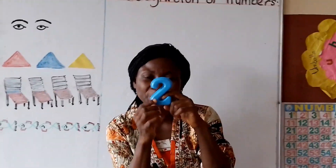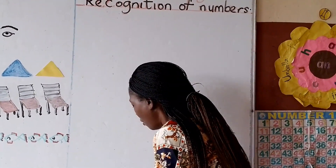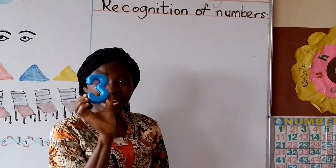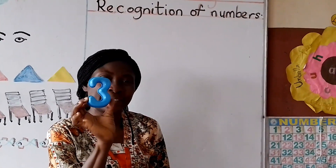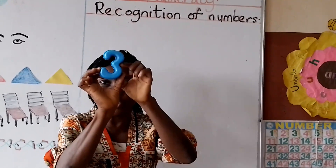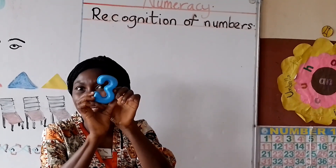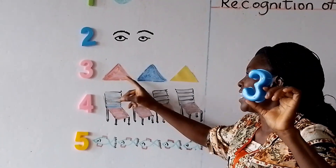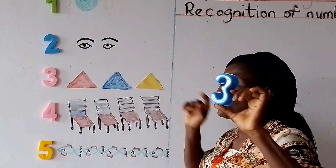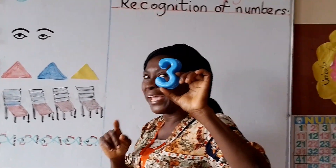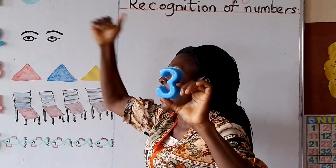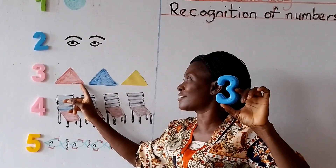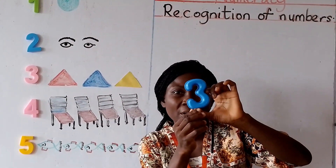Number two. Now I go to number three. Number three — there are things that come in three. For example, primary colors: red, blue, yellow. The traffic lights come in three: red, yellow, green. A triangle has three sides. Number three.